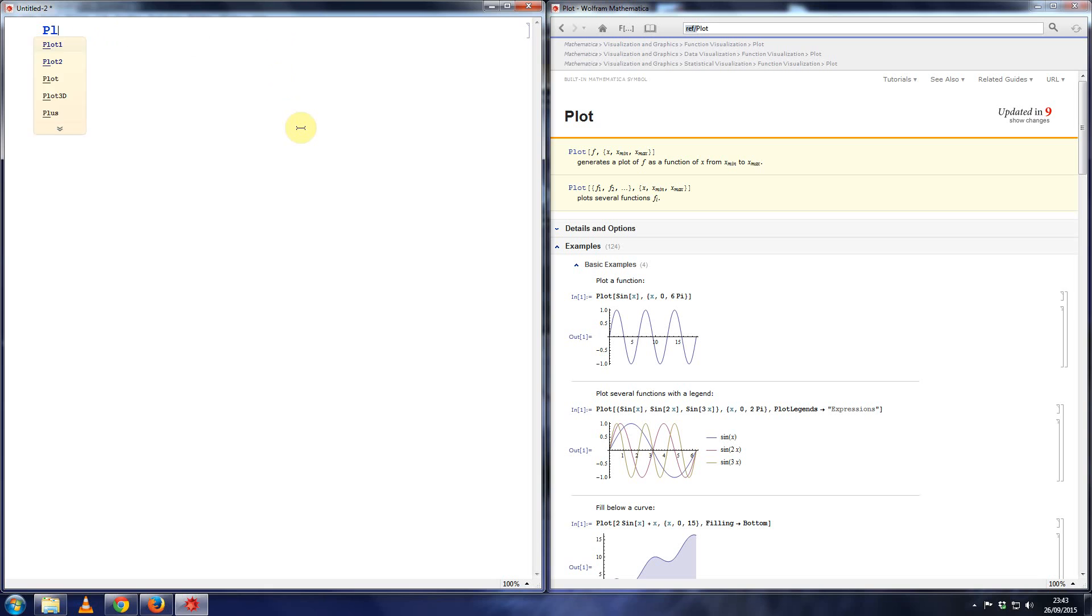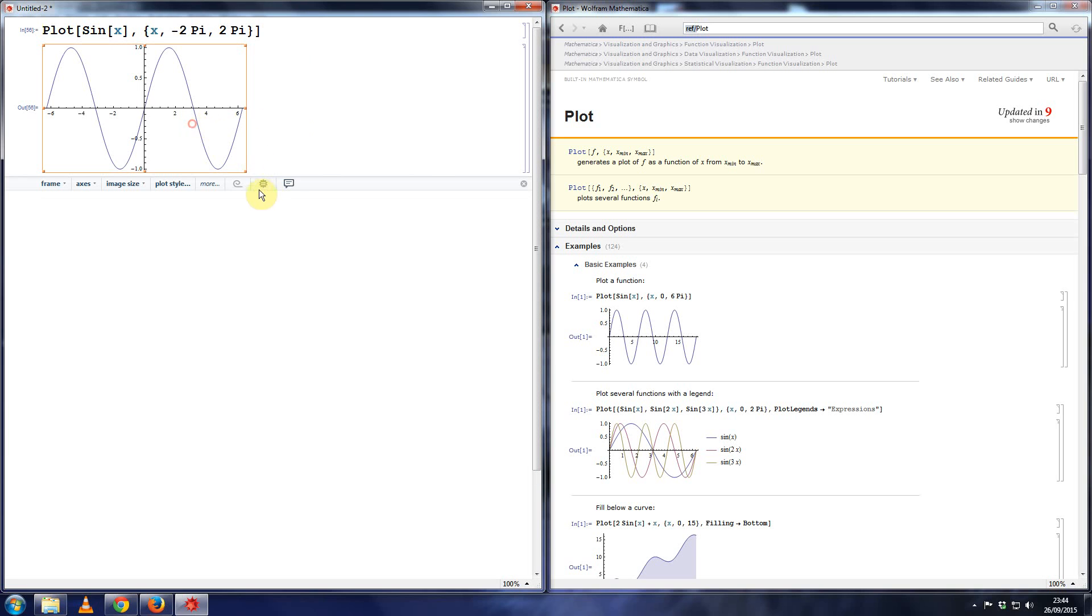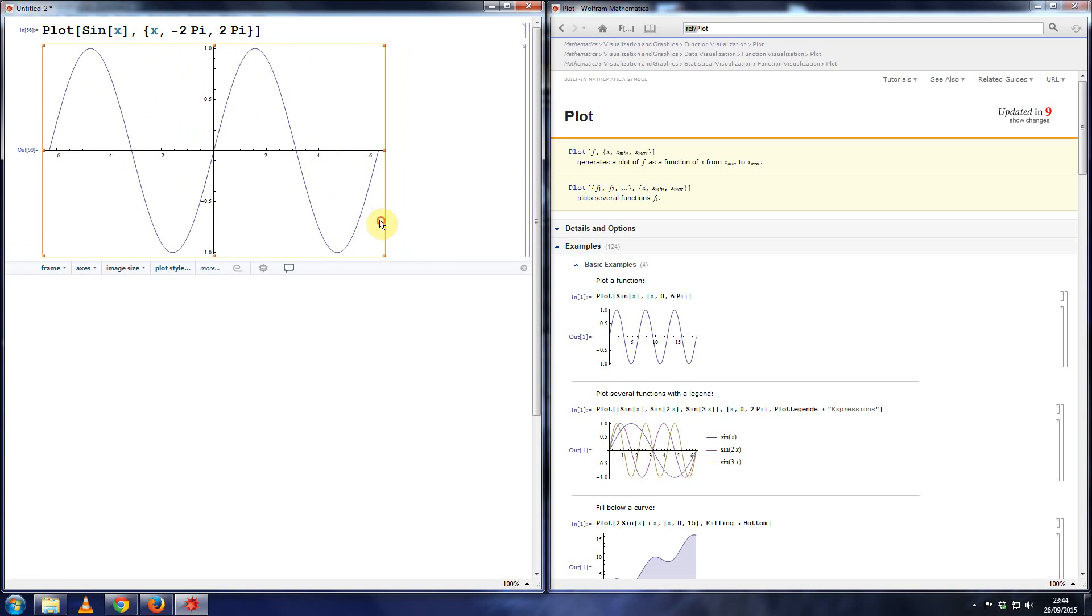So at the most basic level, the way this works is, let's say I have the function sine x. And suppose I plot this from, say, minus two pi to plus two pi. Okay, so that gives us the function y is equal to sine x. Okay, and if I just want to make this a little bit thicker, I could say plot style, thick.